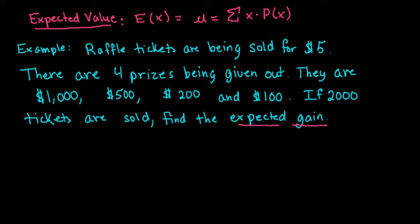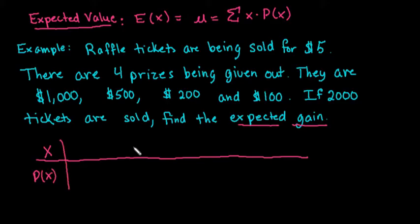To do this, the first thing we're going to do is set up a probability distribution. With a probability distribution we have x and the probability of x. Because we're talking about gains, that's how much money they actually gain. Remember that they did have to pay $5 in order to try to win this money, so they are out $5.